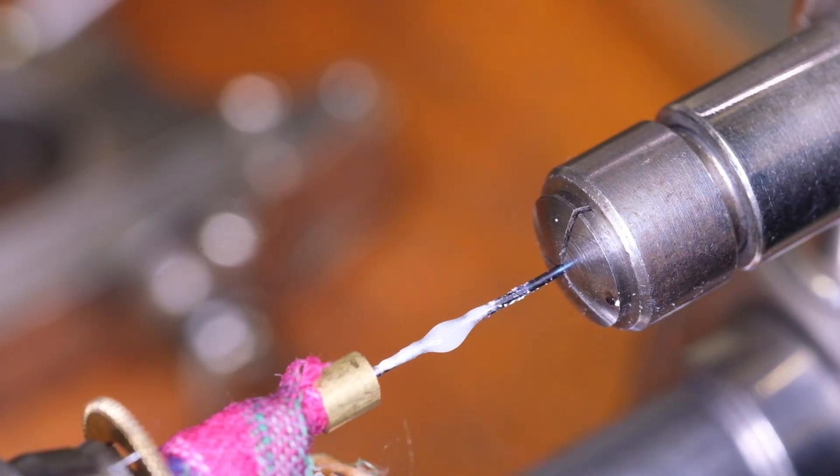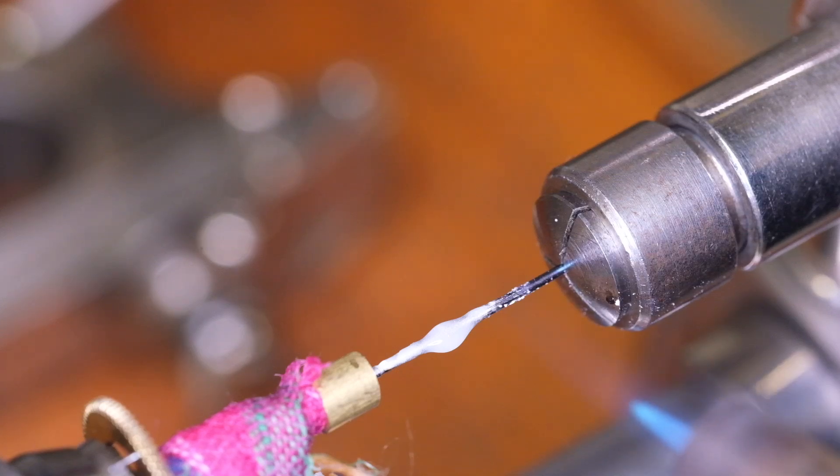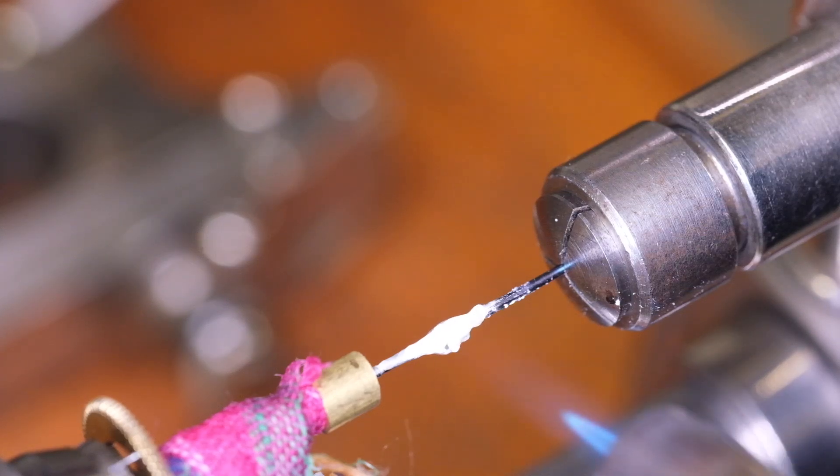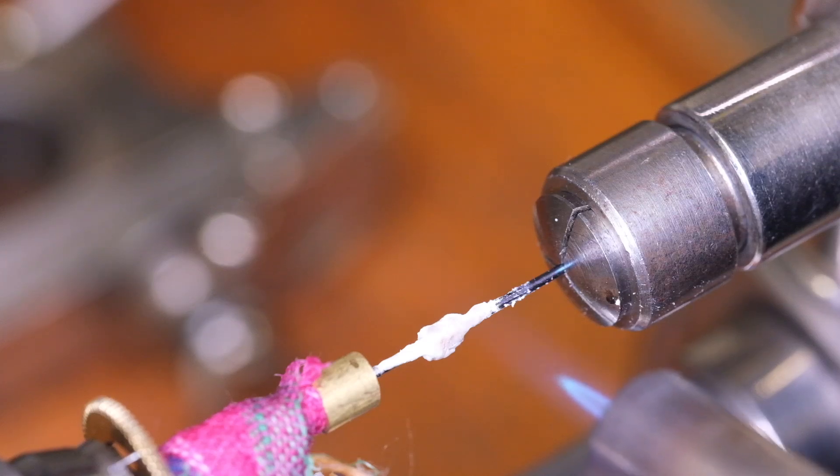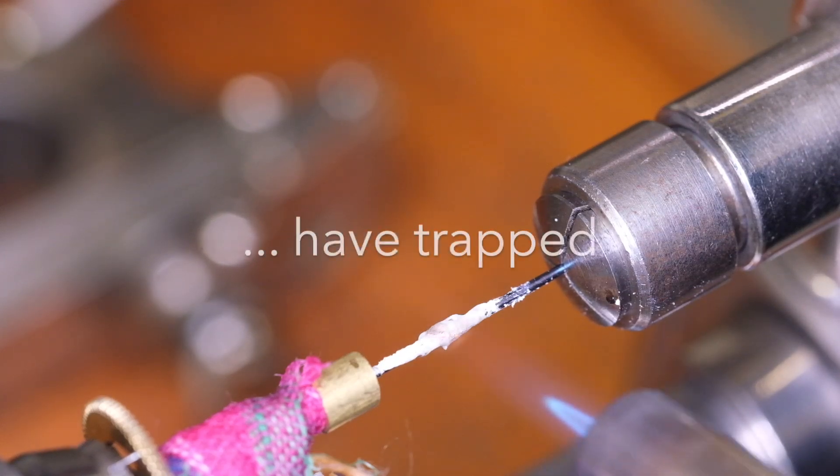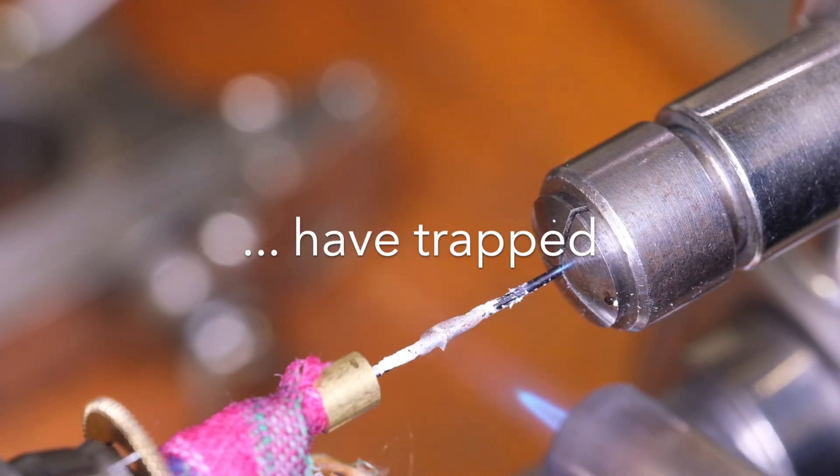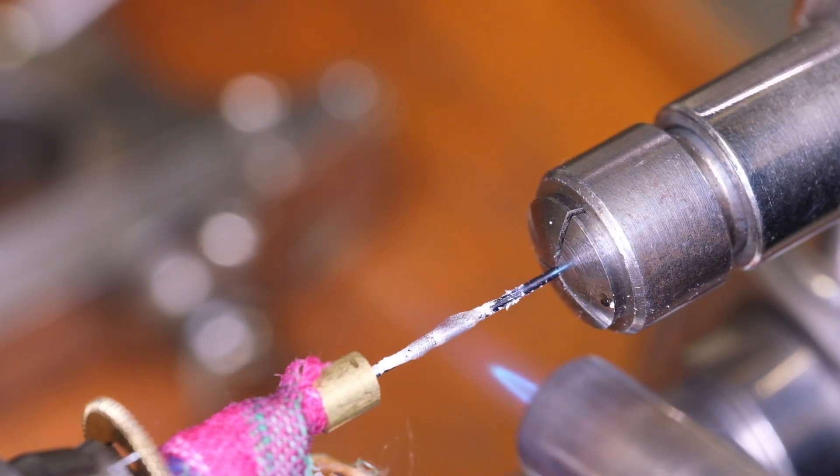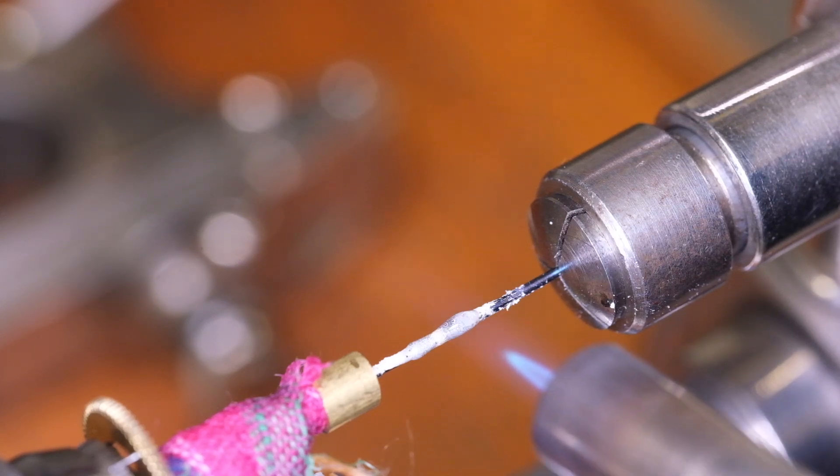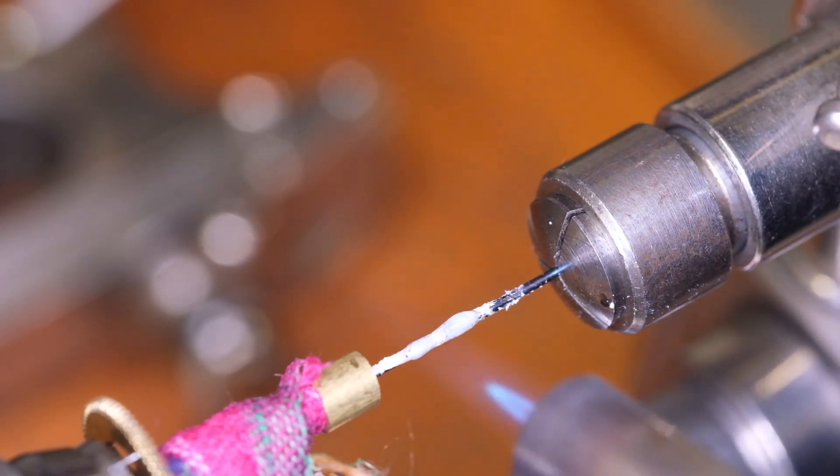The flux I use is tenacity flux, I'll put a link in the description. And the solder is silver solder extra easy, that is relatively low melting point. So I'm going to trap a piece of flattened solder between the two components and then gently push them together when the solder melts.